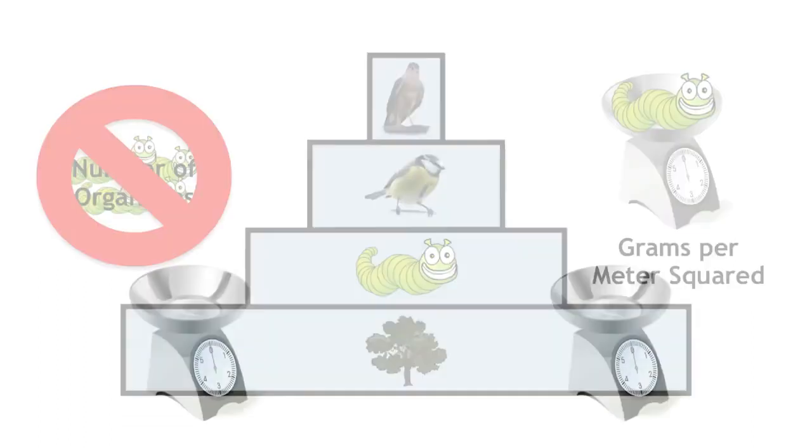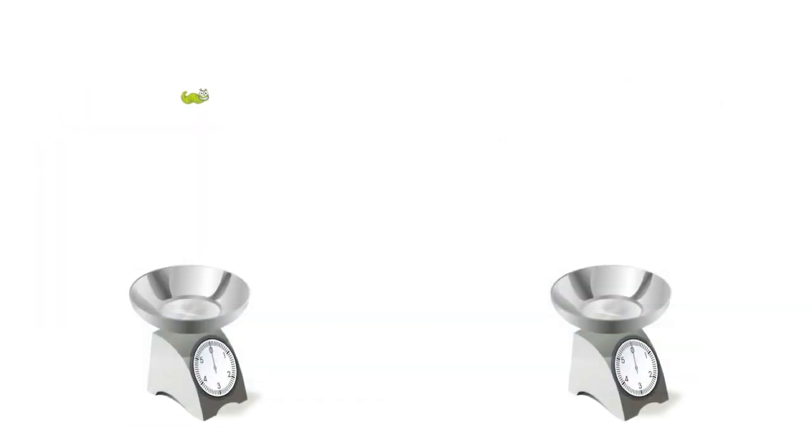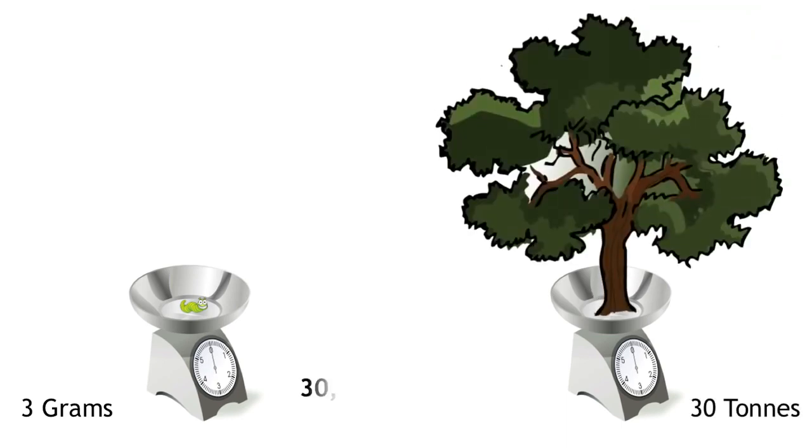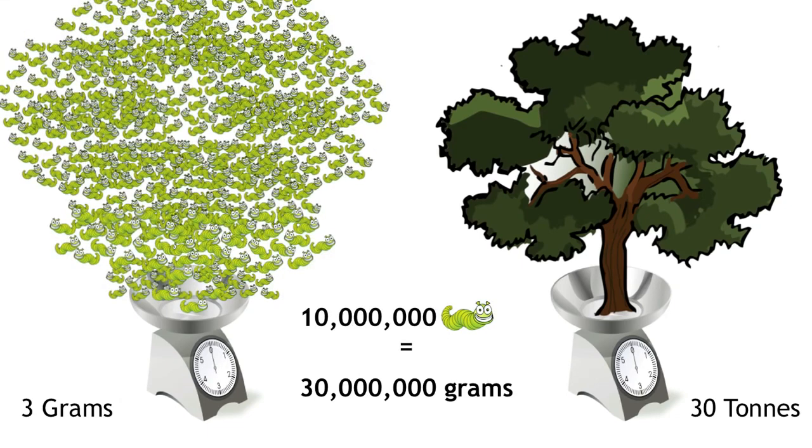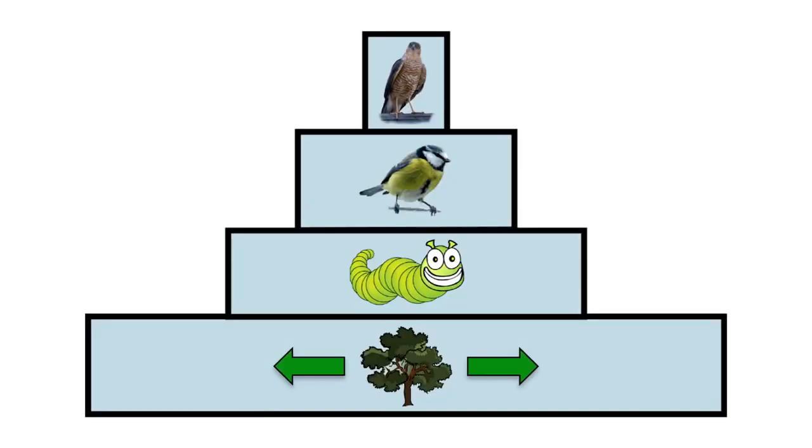Think about it this way. One caterpillar weighs about 3 grams. One oak tree weighs about 30 tons, which is 30 million grams. So that's 10 million caterpillars to equal the mass of one oak tree. Because of this, the bar for the oak tree will be much wider than the bar for the caterpillars, even though there are far more caterpillars and maybe only one oak tree in the ecosystem.